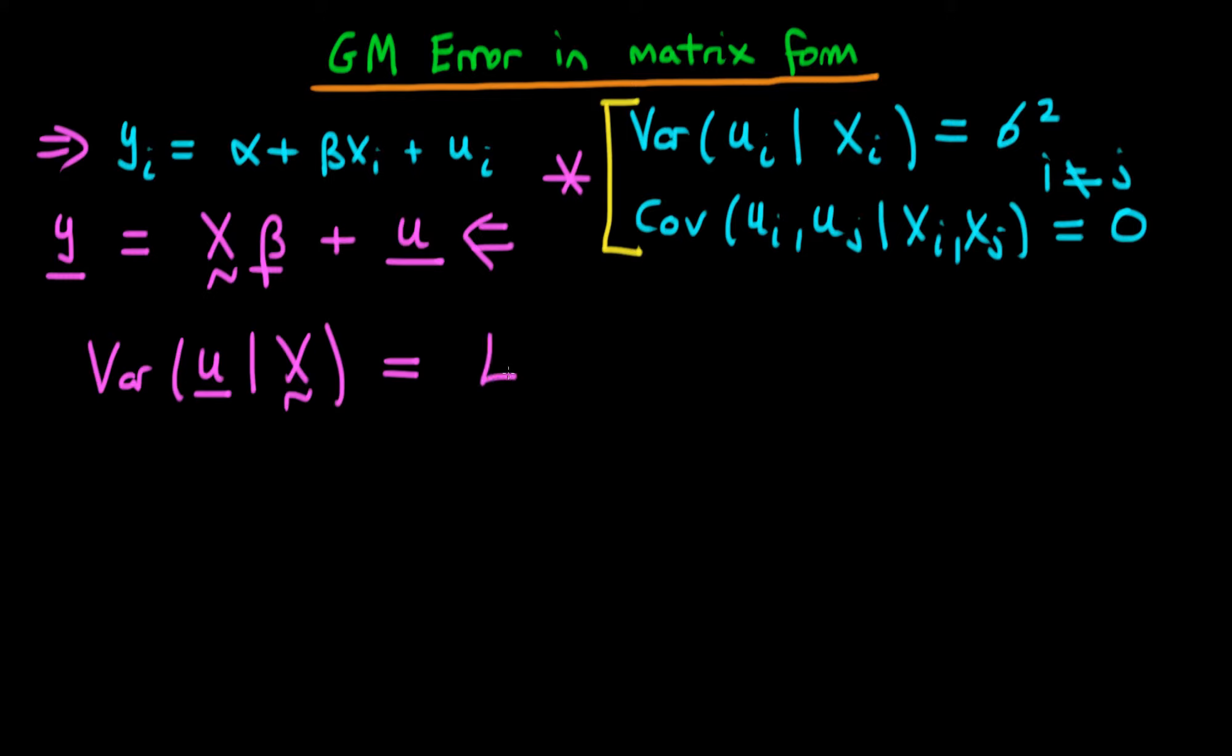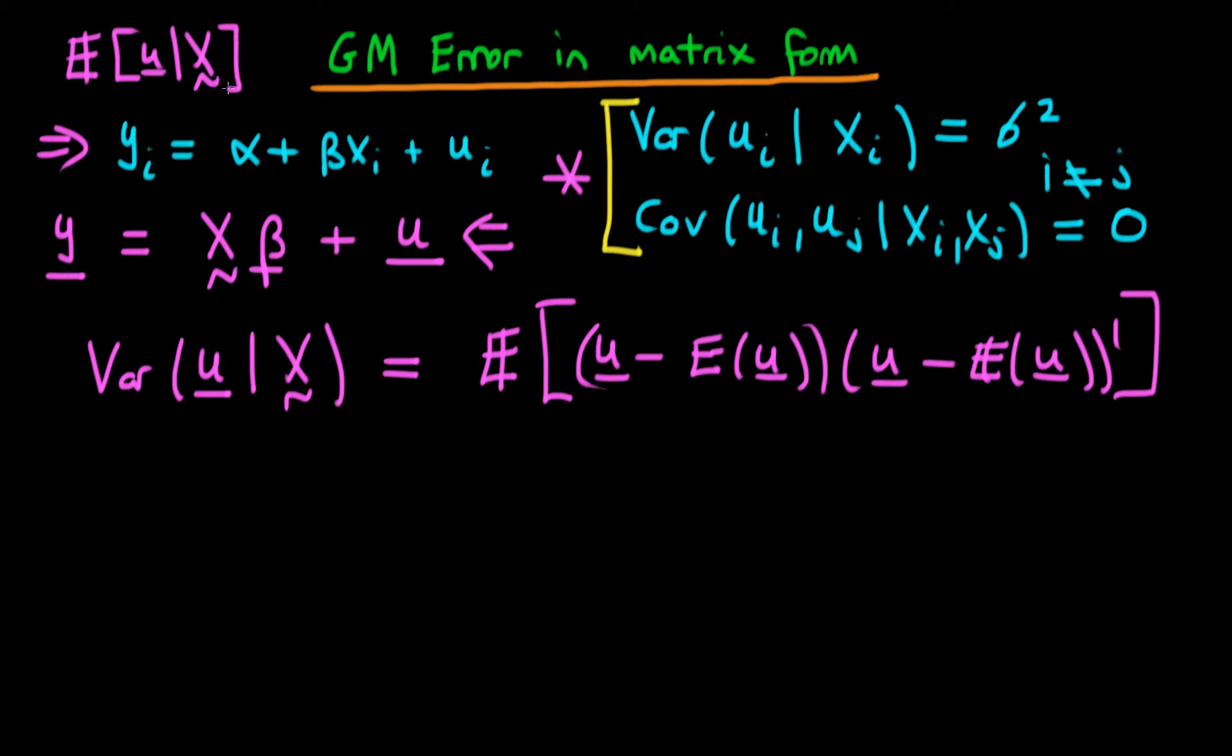It is equal to the expectation of (u - E[u])(u - E[u])' transposed. But here we state that the expectation of u given X is equal to 0. That's one of the Gauss-Markov conditions.